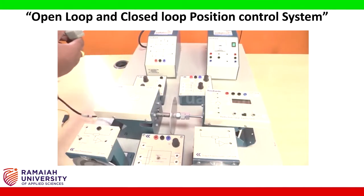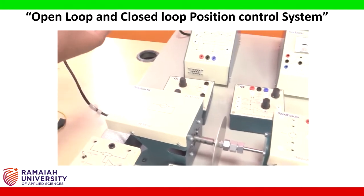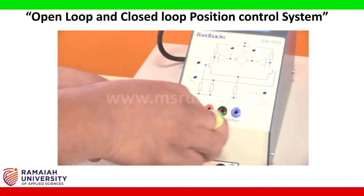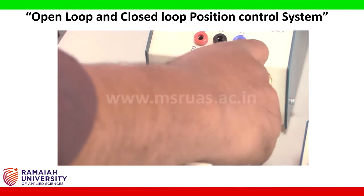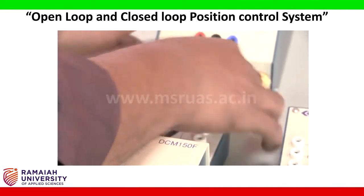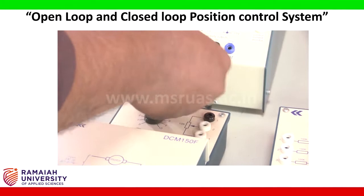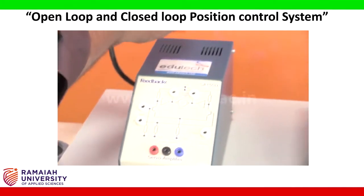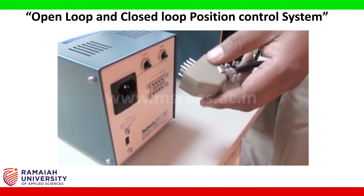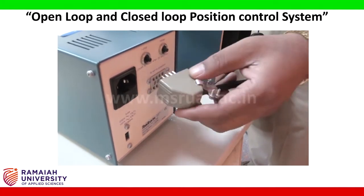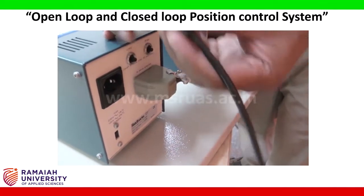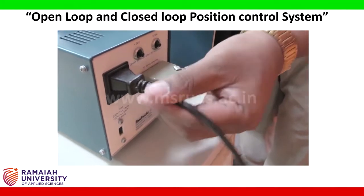Now we shall start the connections. First, we connect the DC motor to the servo amplifier using the multipoint plug. Then another important connection is made between the servo amplifier and the power supply through the multipoint plug. The power cord is also connected to the power supply.